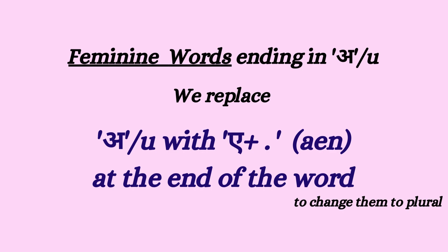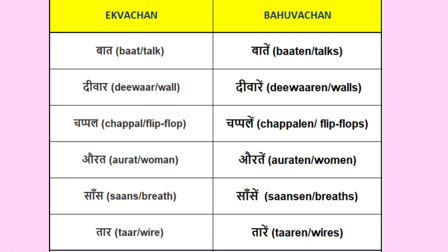Rule number 3: All feminine words which end in a short -aa, that is where there is no extra vowel with the consonant, we replace the ending with -ein. For example: baat → baatein, diwaar → diwaarein, chappal → chappalein, aurat → auratein, saans → saansein, taar → taarein.